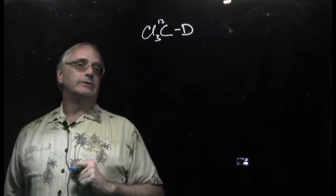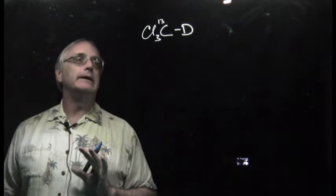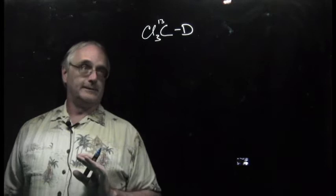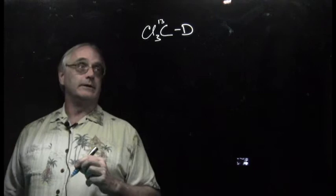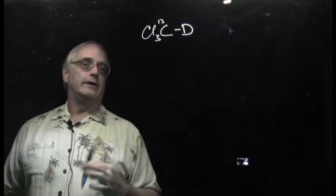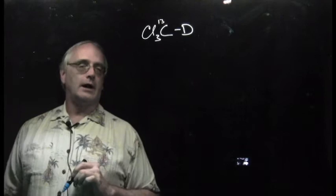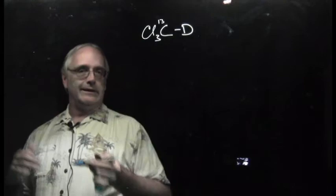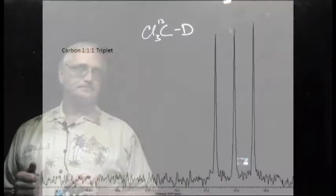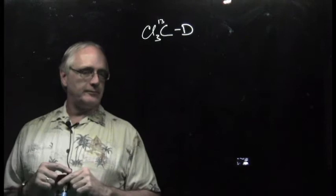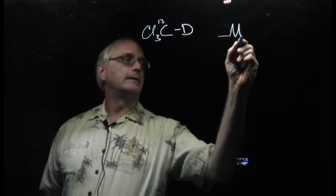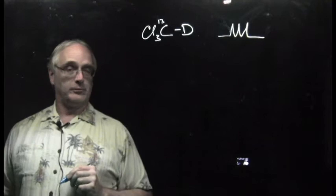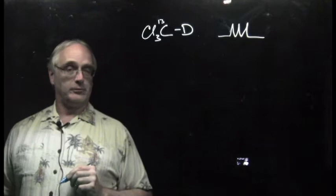Finally, I want to show you the solvent peak of deuterated chloroform again. CDCl3, where about one percent of the time by natural abundance the carbon is carbon-13 rather than the more common carbon-12 — and therefore we observe it in our C-13 NMR spectra. It is what is referred to as a one-to-one-to-one triplet, not the one-to-two-to-one triplet. Those ratios from Pascal's Triangle are nice, but they apply to spin-1/2 nuclei only.